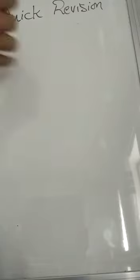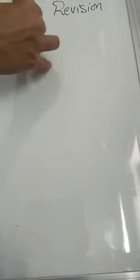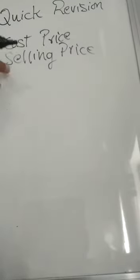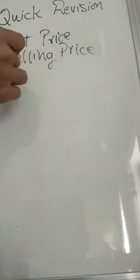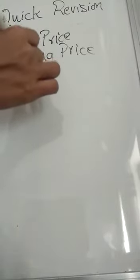So what all things did you learn? You learned profit and loss, and for that you learned cost price and selling price. Cost price is the money they spend and selling price is the money for which they sell things. If cost price is greater than selling price, it will be a loss.